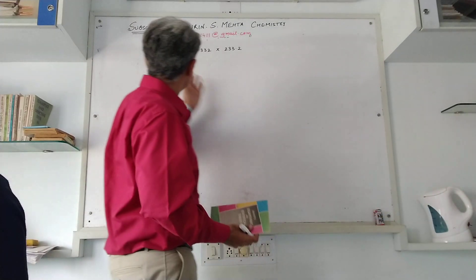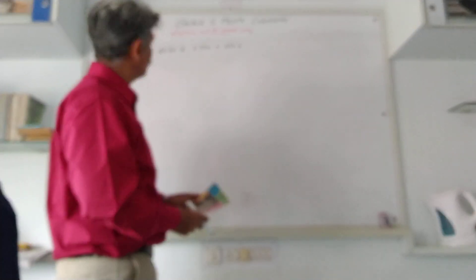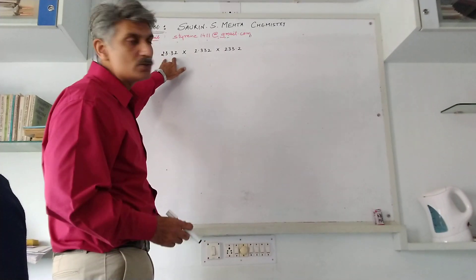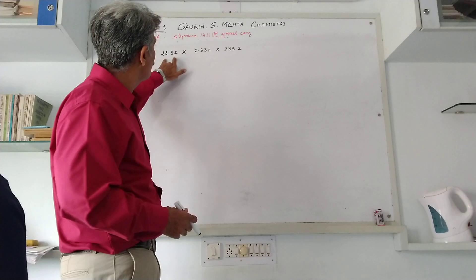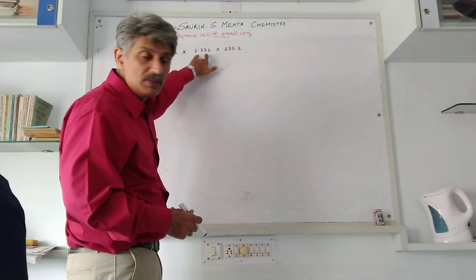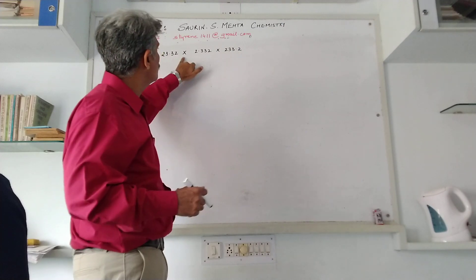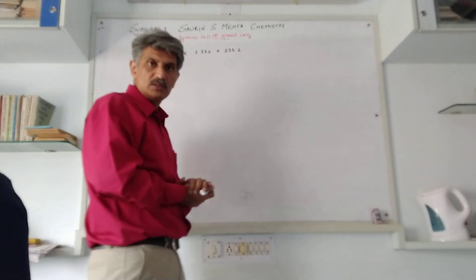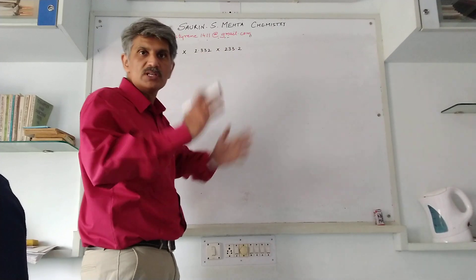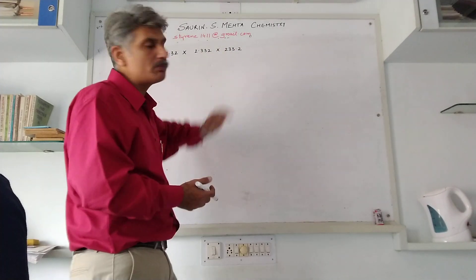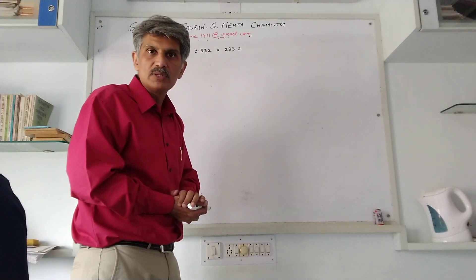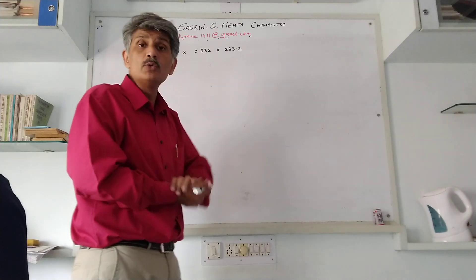As you can see, I have furnished a few values: one is 23.32, one is 2.332, and one is 233.2. I want to perform multiplication for all three numbers. They are huge numbers and cannot be calculated without a calculator. We'll do it with the help of a log table.